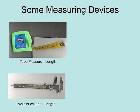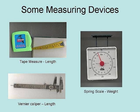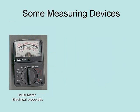Here we have a vernier caliper, which also measures length, but in a more precise manner. It is commonly used for scientific measurements. This is a spring scale, which measures the weight of an object. This is a multimeter, which measures various electrical properties such as volts, amperage, and resistance.